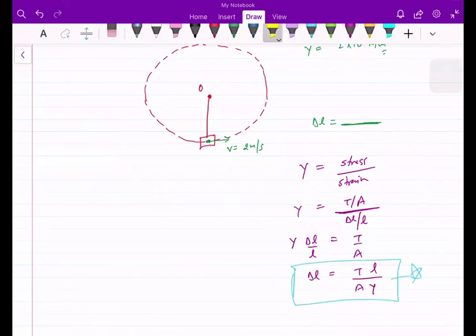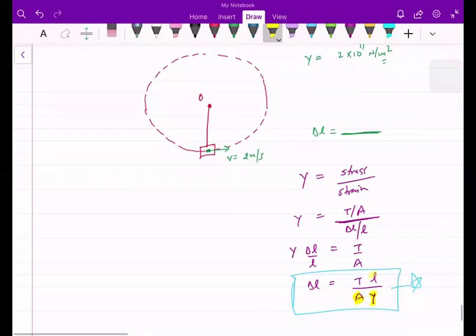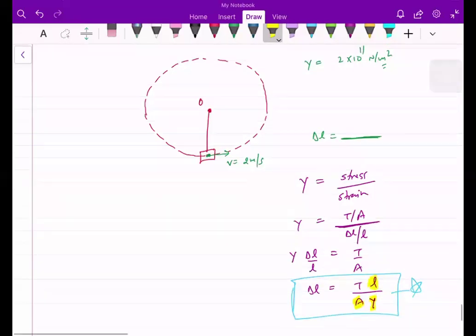This is the situation which is known. I can highlight - we know Young's modulus, area of cross section, length of the wire. If we find the tension in the wire, then the elongation will be done.